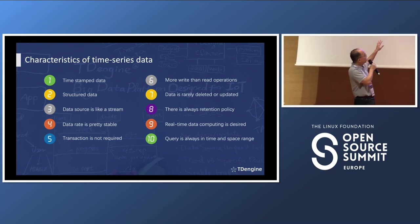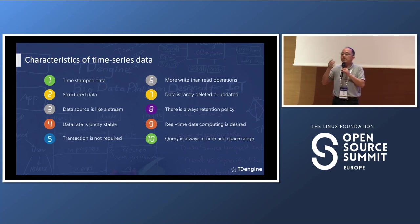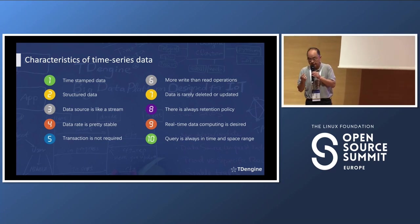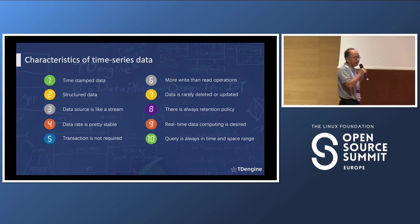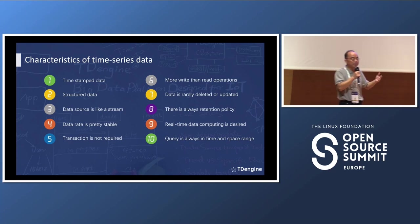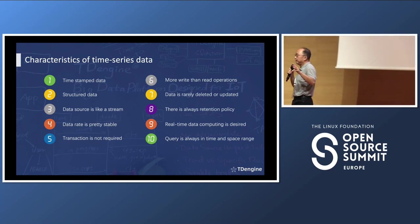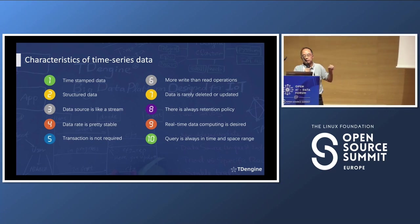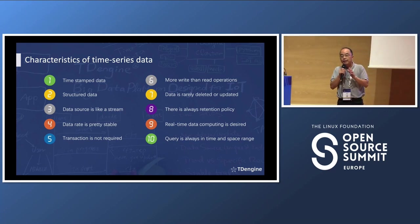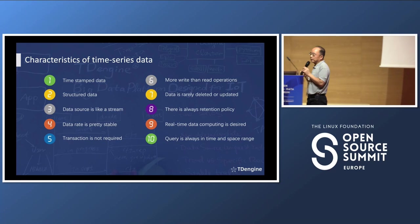Number four, the data rate is very stable. Once you know the number of devices and the sampling rate, you know how much traffic will be generated. Unlike holiday seasons when Amazon traffic spikes 10x, for IoT and smart manufacturing the data rate is very stable. Number five, compared with a standard database, transactions are not required — because there's no update, no change. You don't need to roll back. That's a big advantage.